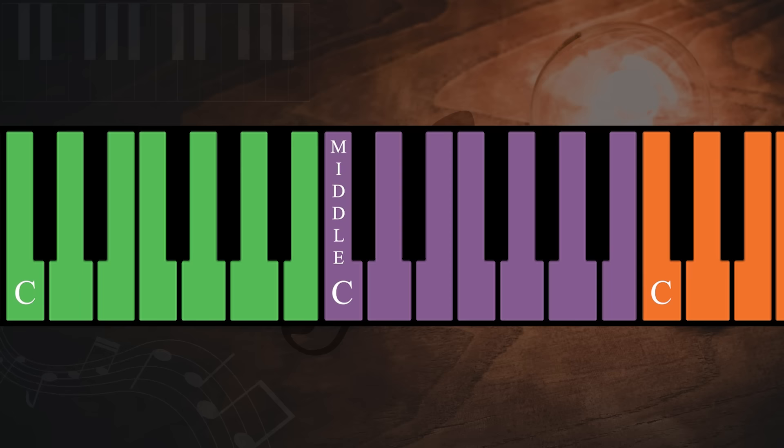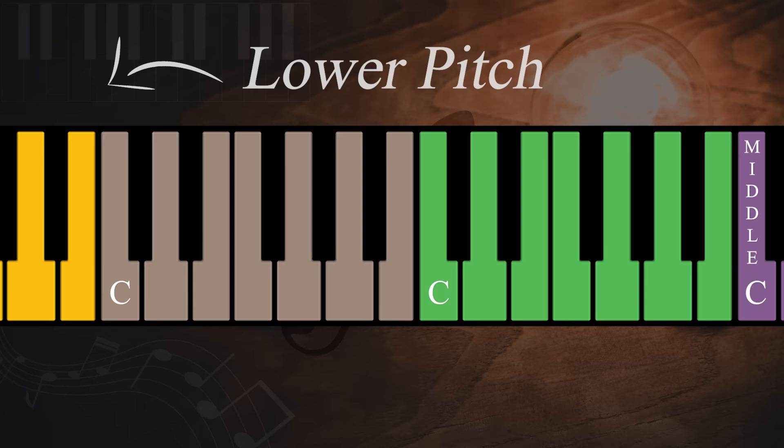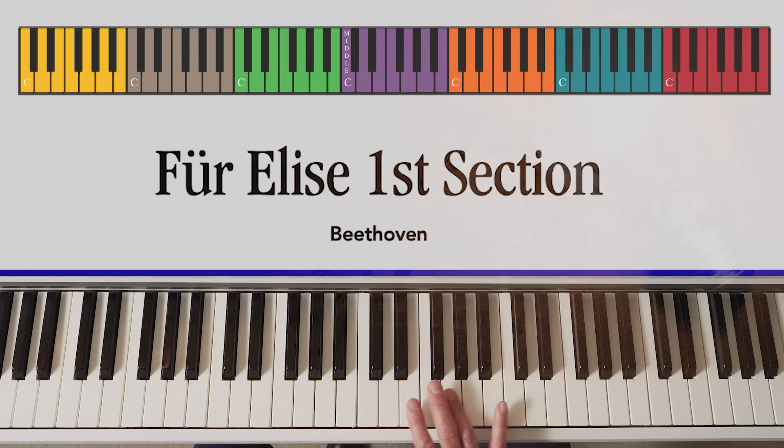As a reminder, here's middle C. This is the purple zone. Here we have orange and blue. Again, middle C is here - green, brown, and yellow.